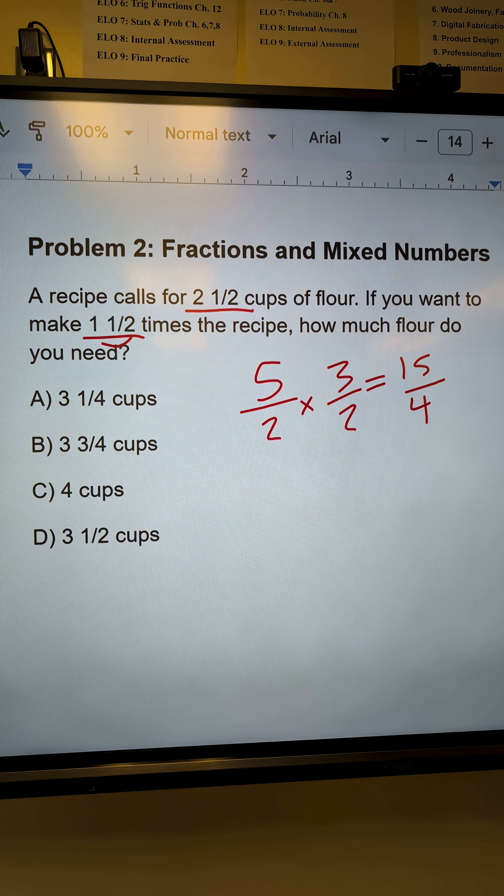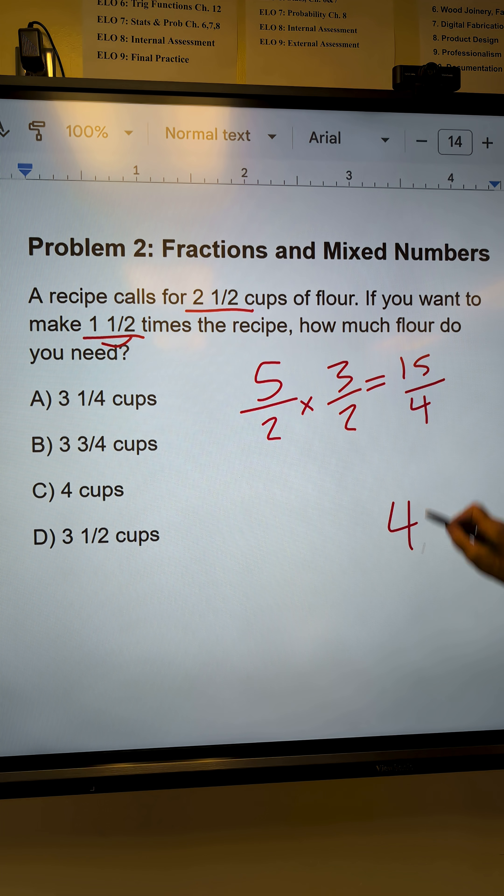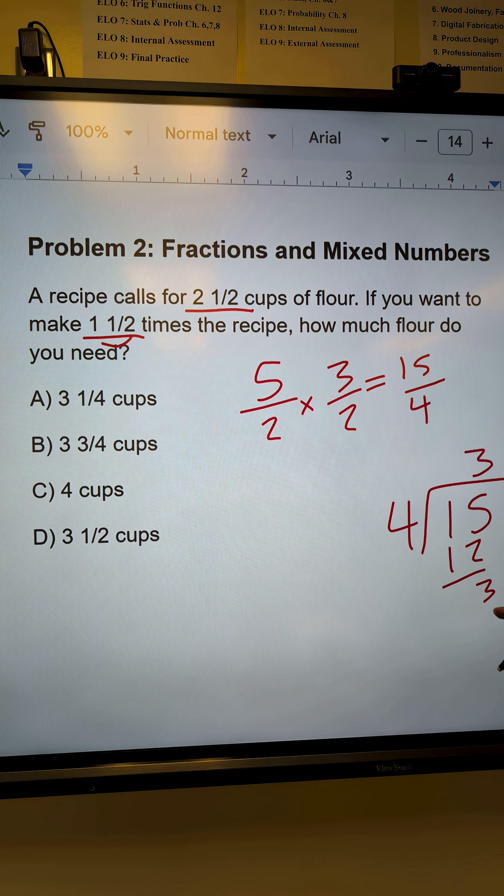I check my answers. These are mixed numbers. I've got to convert it. Think of that fraction falling over. 4 goes into 15 3 times to give me 12 with 3 left over.